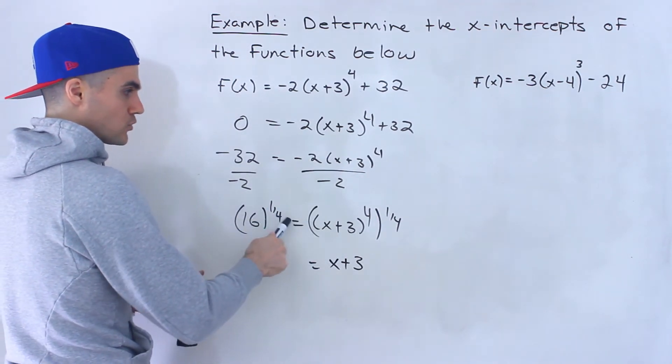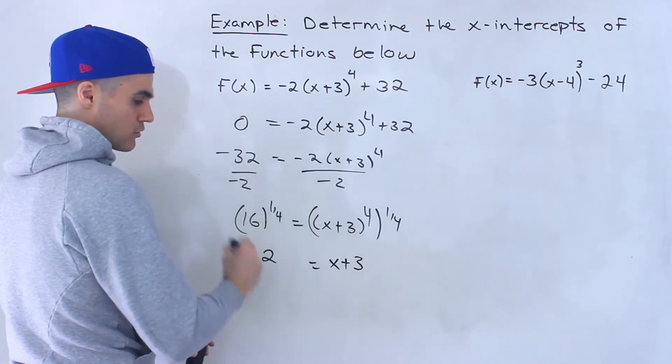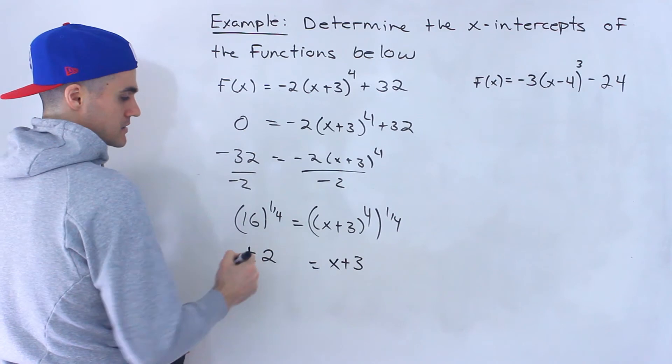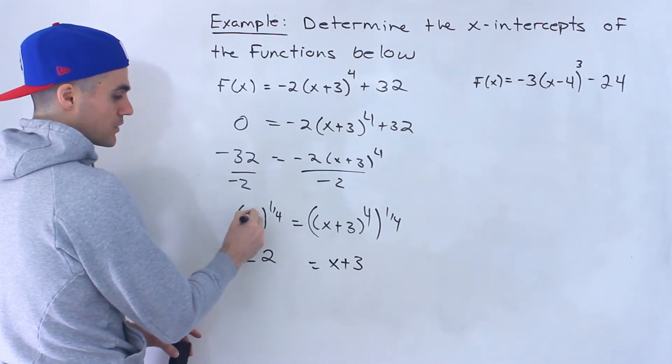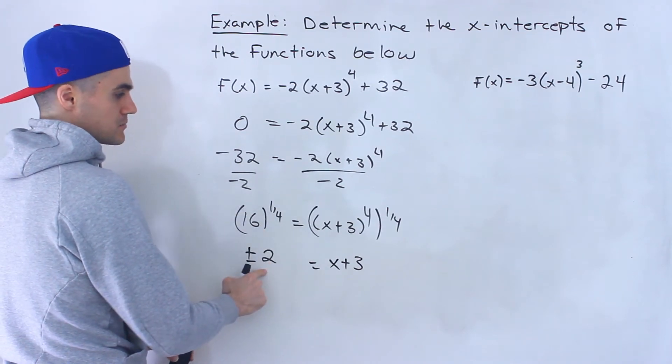So remember any even root, whether it's a square root, fourth root, sixth root, eighth root, it's always going to be a plus or minus here. Unless it's a negative number here, then it's going to be undefined. Or unless it's 0, then this is just going to be 0.